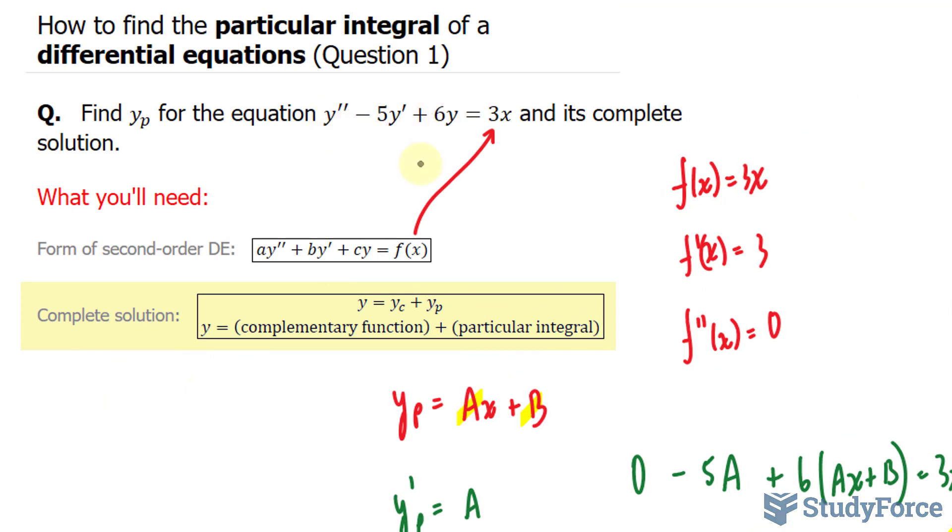You want to rewrite this as a quadratic, where this is m squared, this is minus 5m, and this is plus 6 equals 0. What two numbers here multiply to 6 and add to negative 5? The two numbers I'm thinking of are m minus 3 and m minus 2. Therefore, our m values are 3 and positive 2.